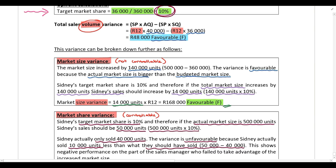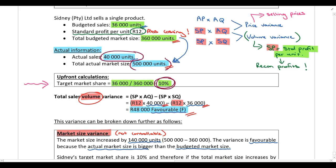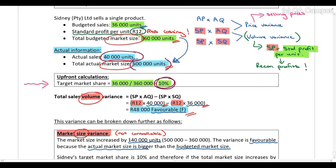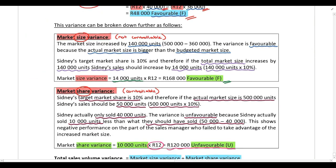Now, assume we are analyzing the performance of the sales manager to determine whether he should be paid a bonus. If we just look at the total sales volume variance, we would say yes — he sold more than budgeted, indicating positive performance. However, the problem is that the total market size increased, so the company should naturally sell more units. When we split the variance, we see the company hasn't maintained its market share — they budgeted 10% but actually only sold 40,000 of 500,000 units, giving an actual market share of only 8%.